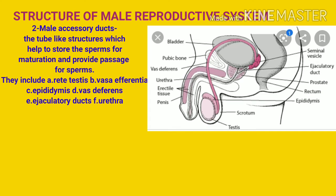The second part of the male reproductive system is the male accessory duct. The tube-like structures which help to store the sperm for maturation and provide passage for sperms are called male accessory ducts. They include: A. Rete testis, B. Vasa efferentia, C. Epididymis, D. Vas deferens, E. Ejaculatory duct, F. Urethra. These ducts help to store the sperm and provide passage for sperms.